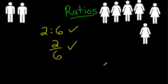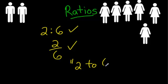That's the second way to write a ratio. The last way to write a ratio is with words: two, six. And that's the last way to write a ratio — sorry.